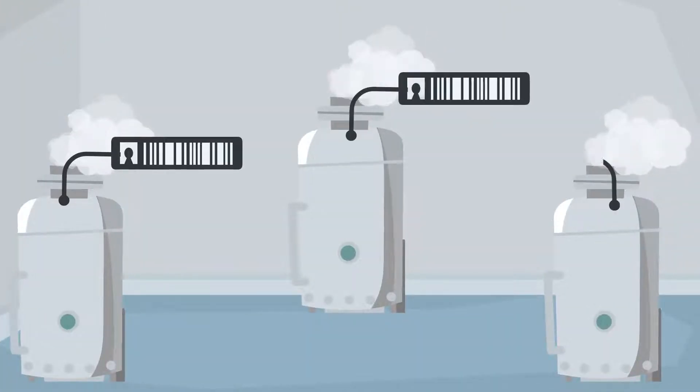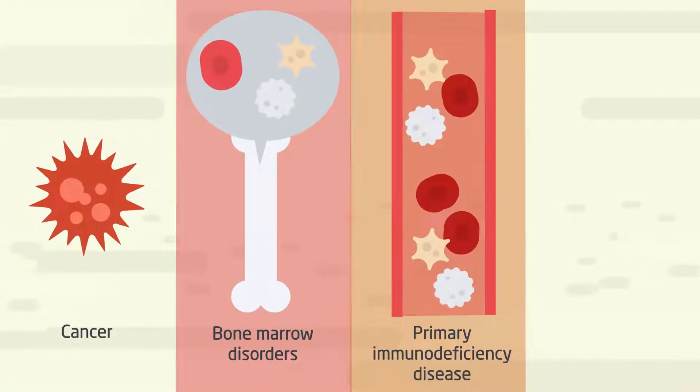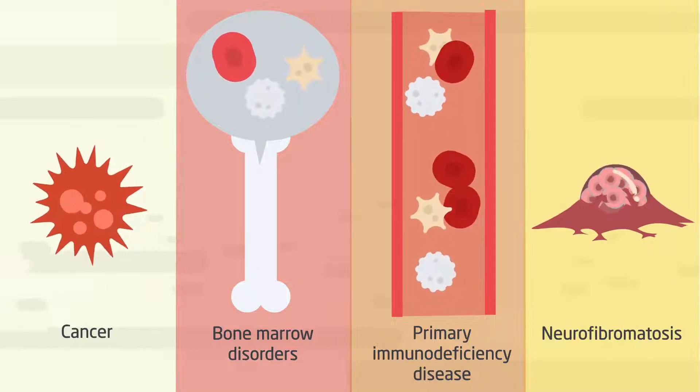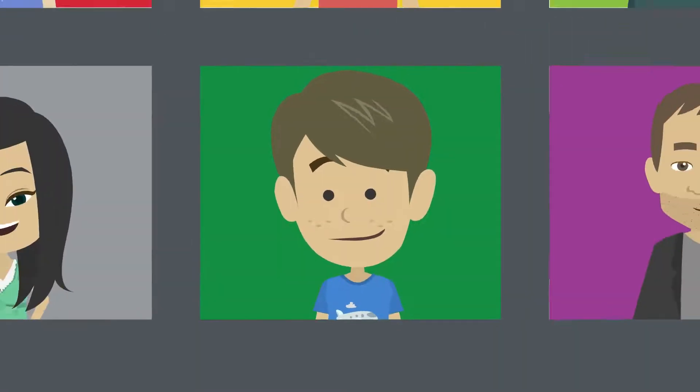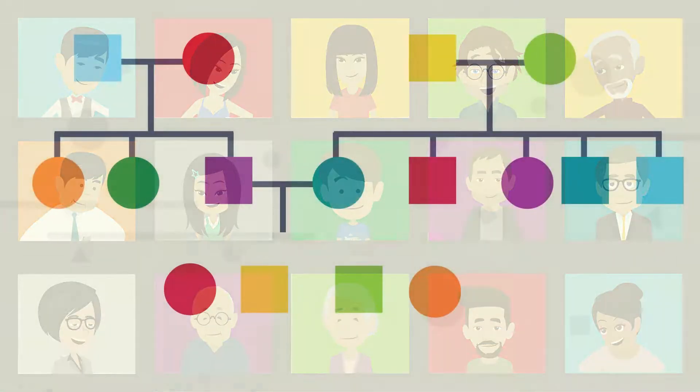Our Biobank includes samples and health information from people with cancer, bone marrow disorders, primary immunodeficiency disease and neurofibromatosis. It also includes samples and health information from their siblings, parents and relatives.